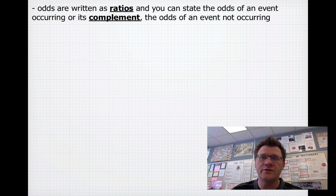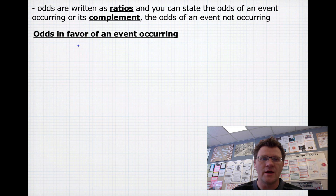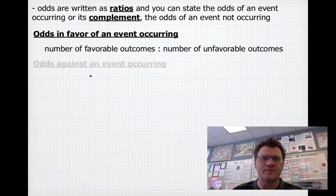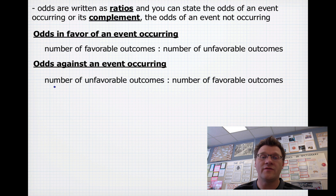Odds are written as ratios, and you can state the odds of an event occurring or its complement, which are the odds of an event not occurring. The odds in favor of an event occurring are written as a ratio of the number of favorable outcomes over the number of unfavorable outcomes. The odds against an event occurring would be the number of unfavorable outcomes compared to the number of favorable outcomes.